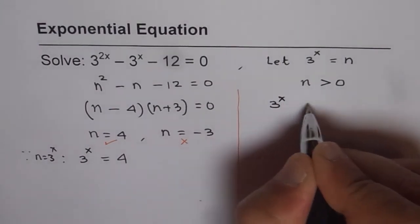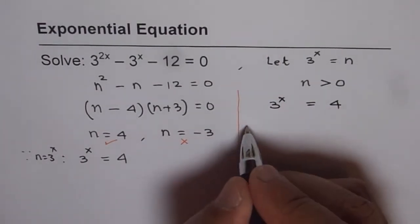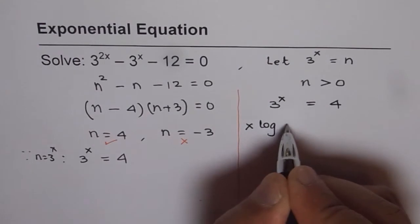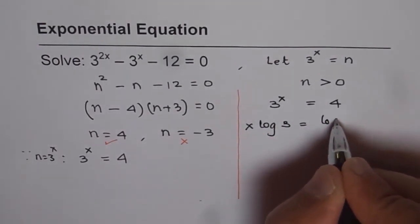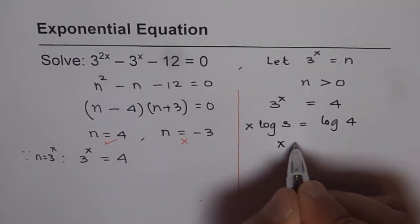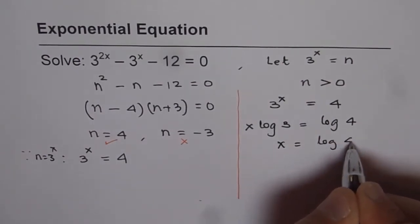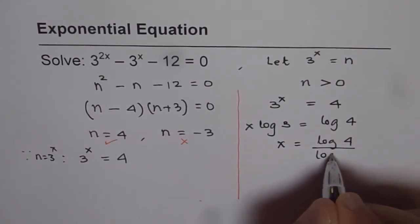Let me rewrite it. Taking log both sides, we get x times log 3 equals log 4, and x equals log 4 divided by log 3.